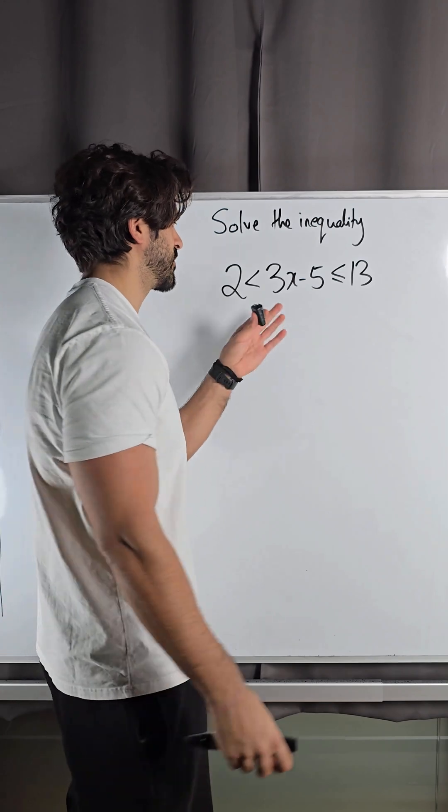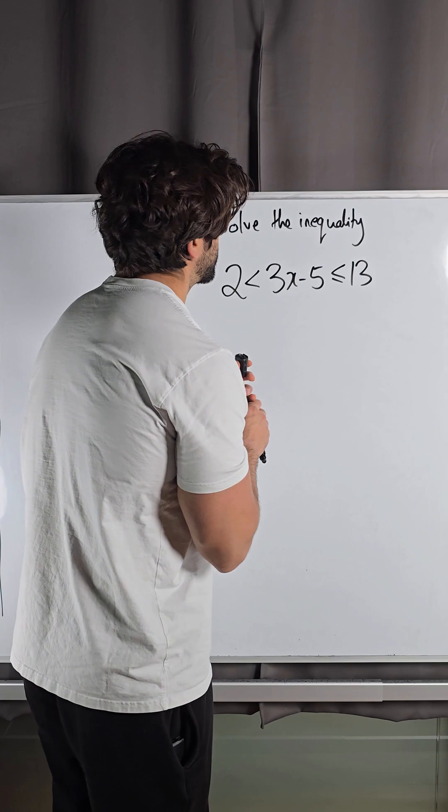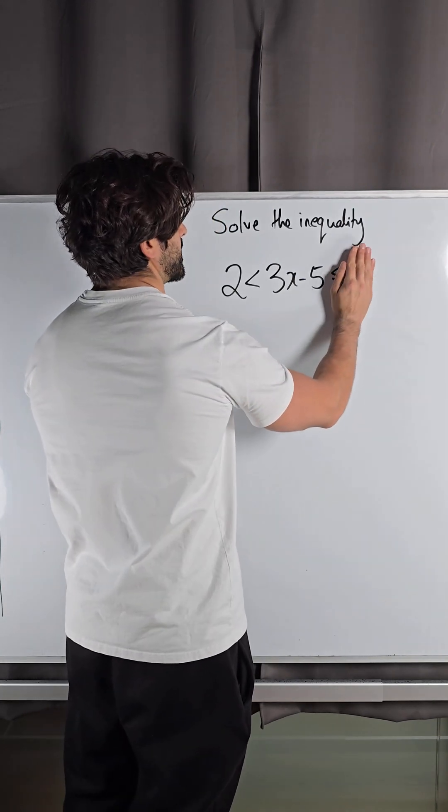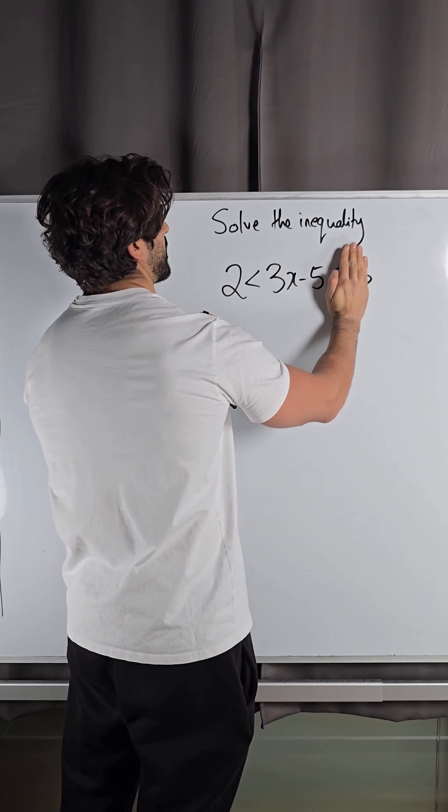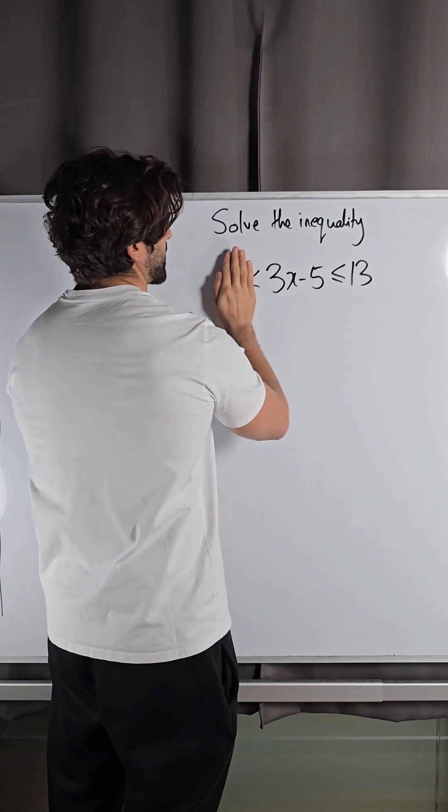But how do you know? All you need to do guys is cover up one side and say, 'Alright, 3x minus 5 is greater than 2, how would you solve that?' You would add 5 and divide by 3. Then you cover this side and say, 'Alright, how would you solve this side?' You also add 5 and divide by 3.